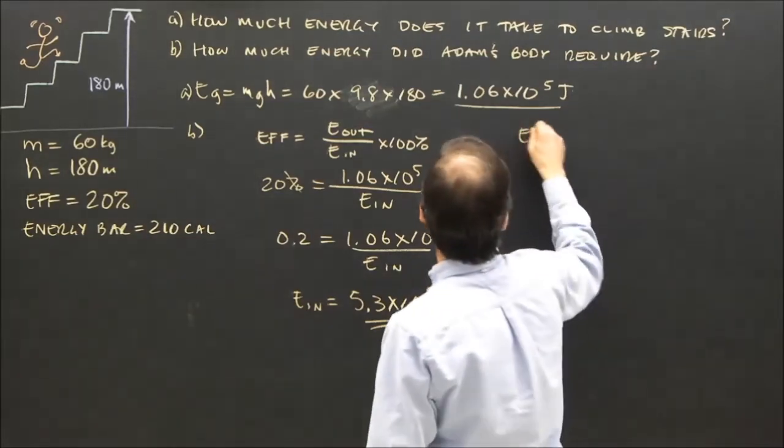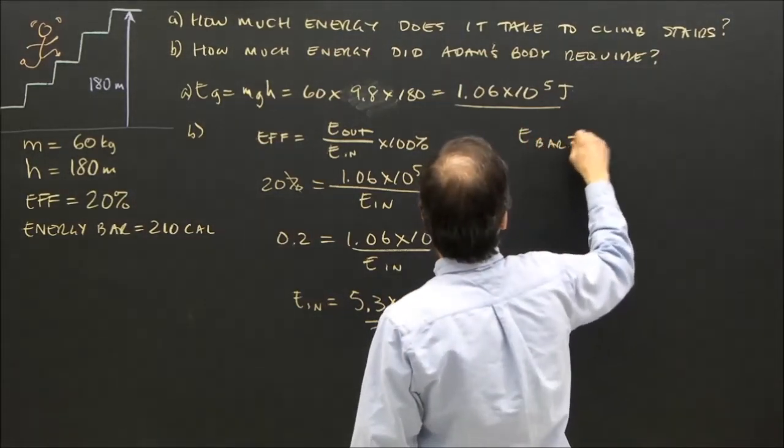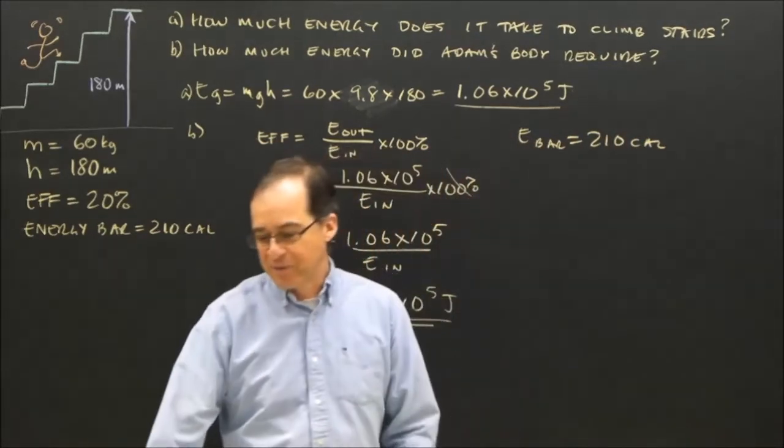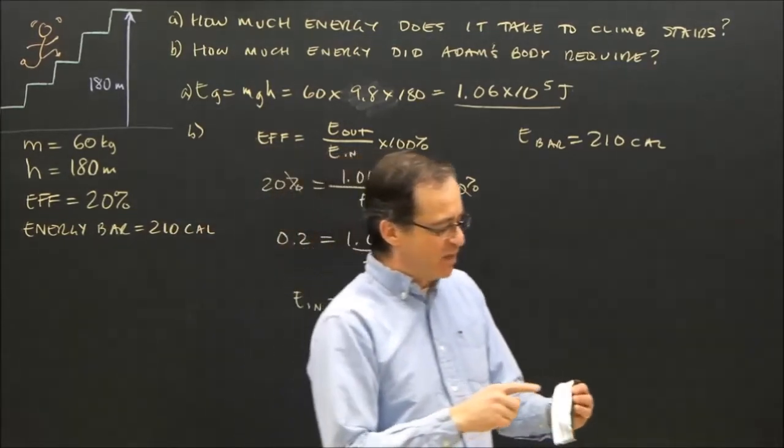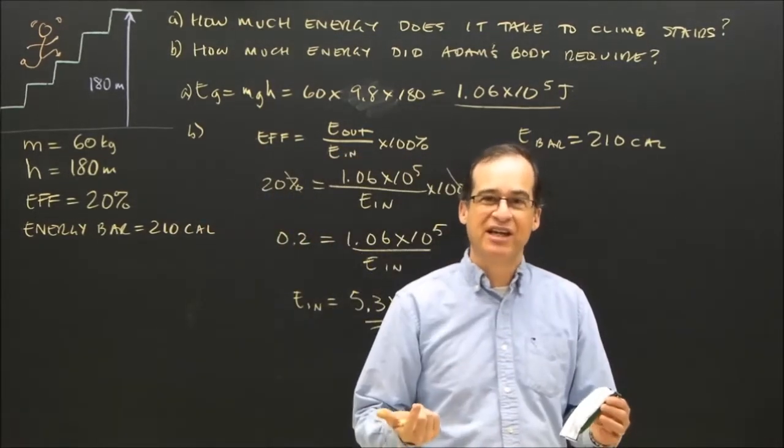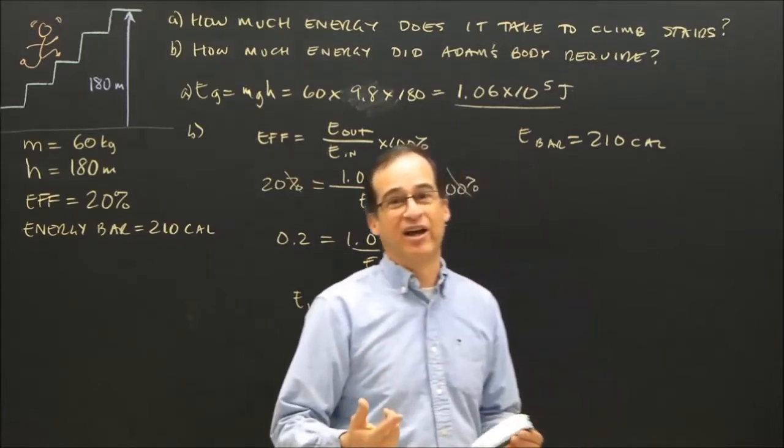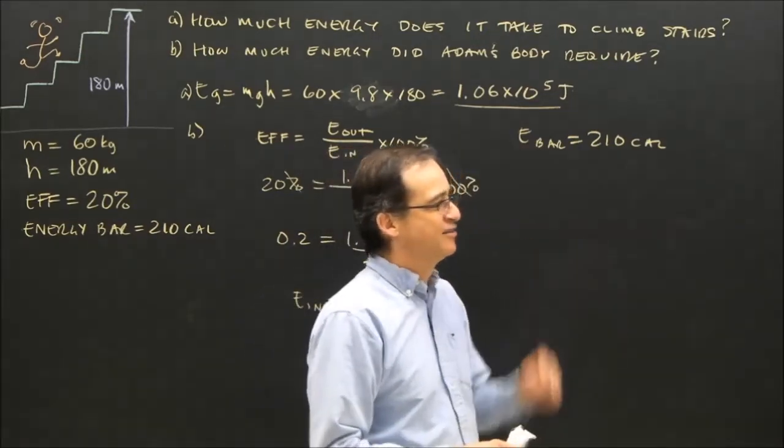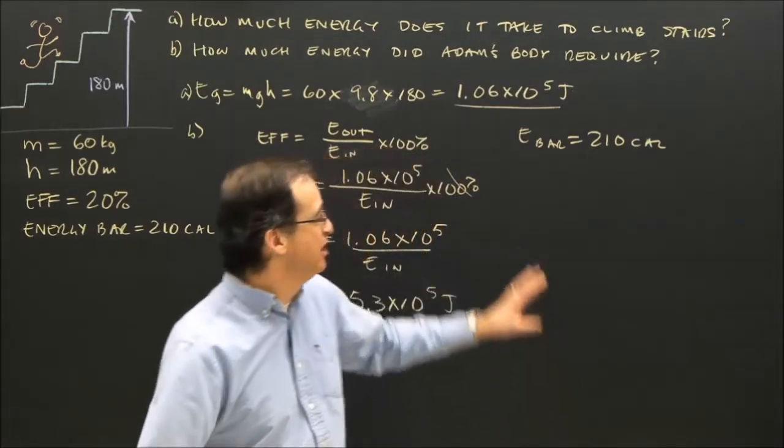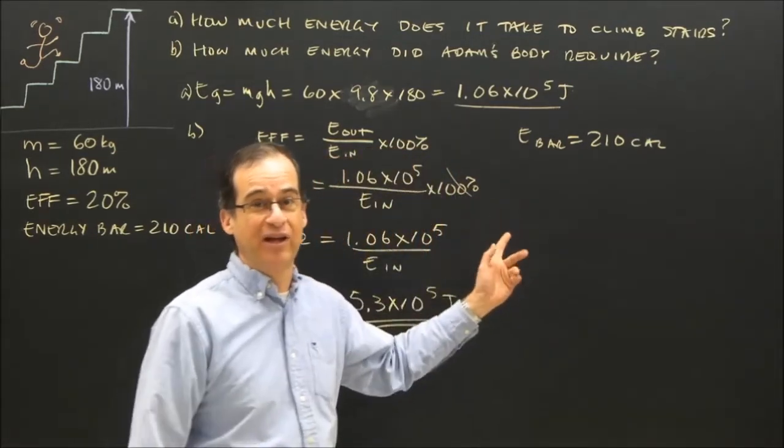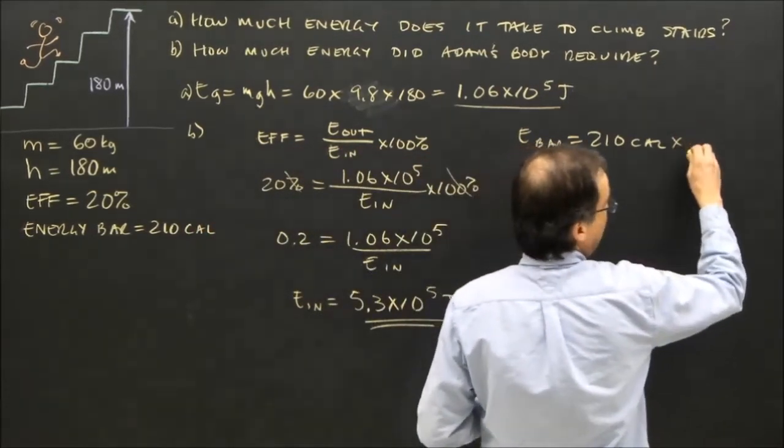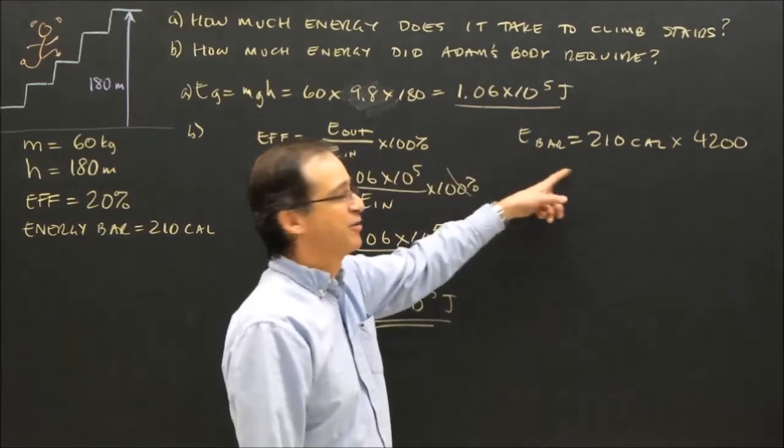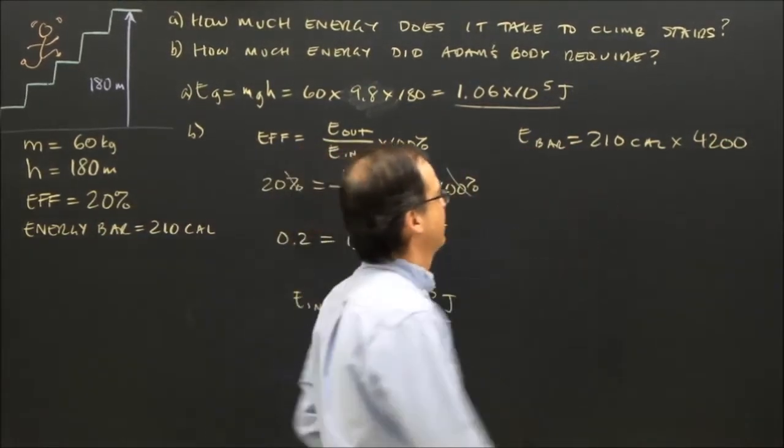So the energy bar, the energy in the bar is 210 calories. Now, the way we do calories on food, we sometimes call them food calories, because it's really not 210 calories. It's 210 kilocalories or 210,000 calories. And then I've got to turn that into joules. The way you do that, you can leave it in food calories or kilocalories and multiply by 4200. So if I multiply food calories or what's written on the bar by 4200, I get the number of joules.